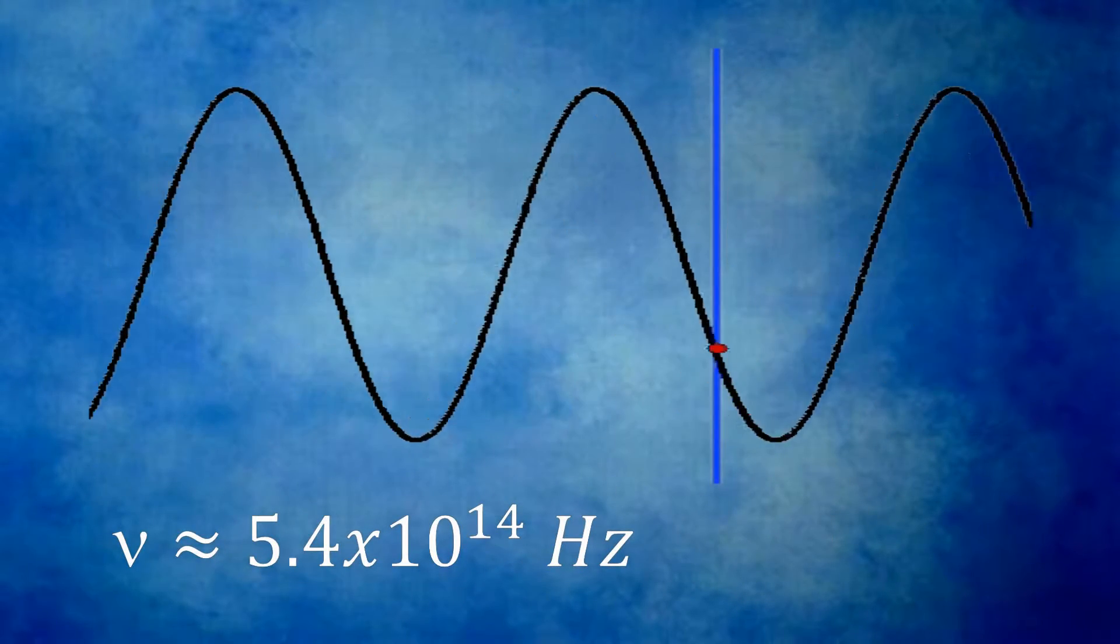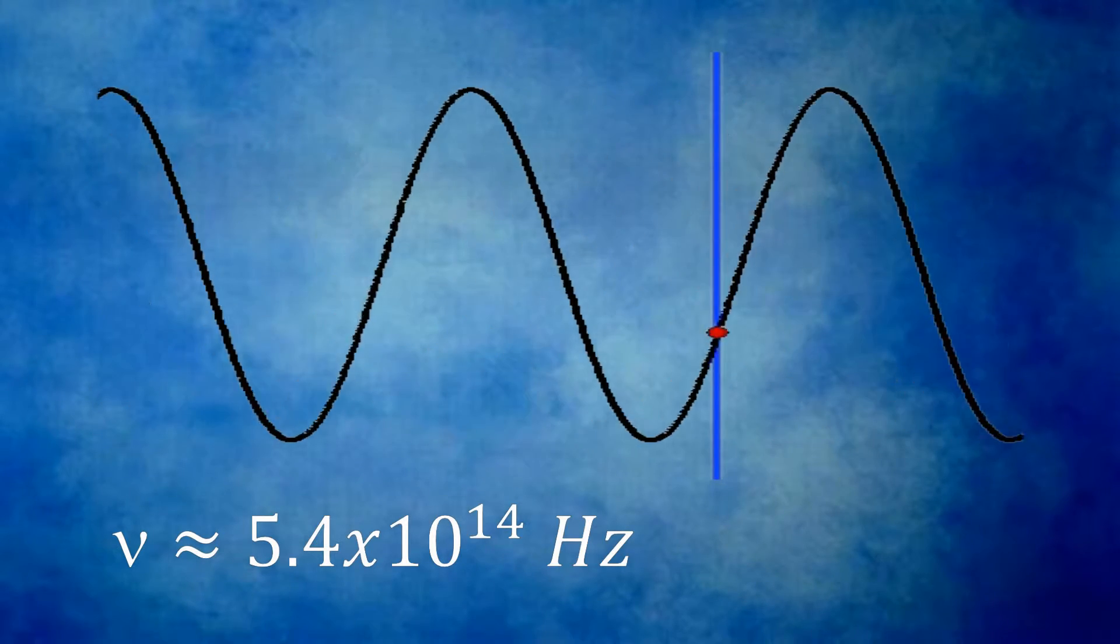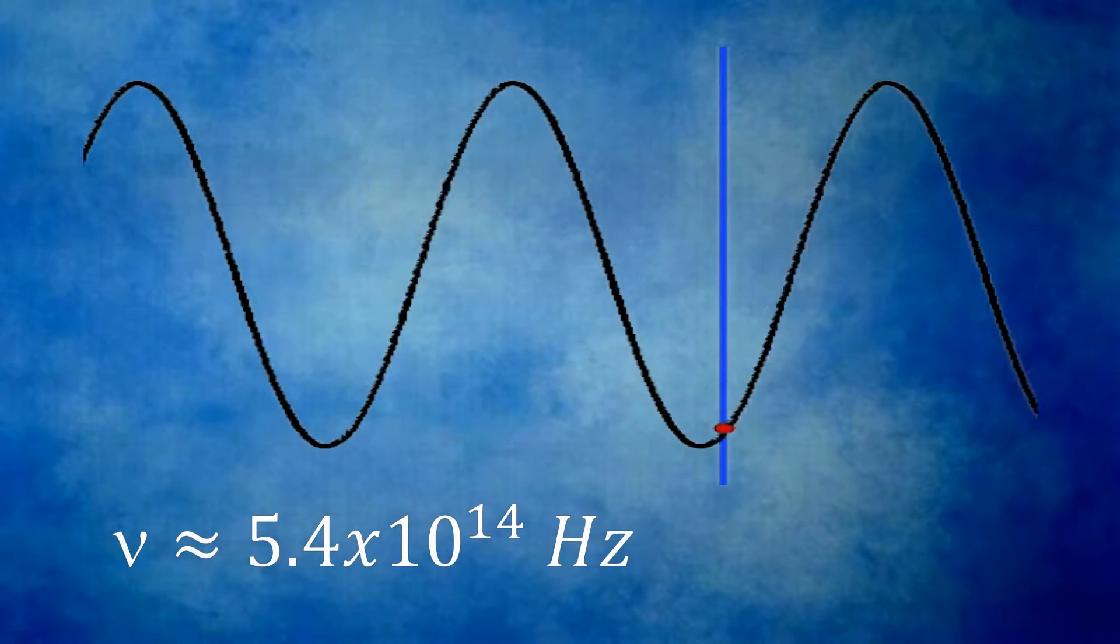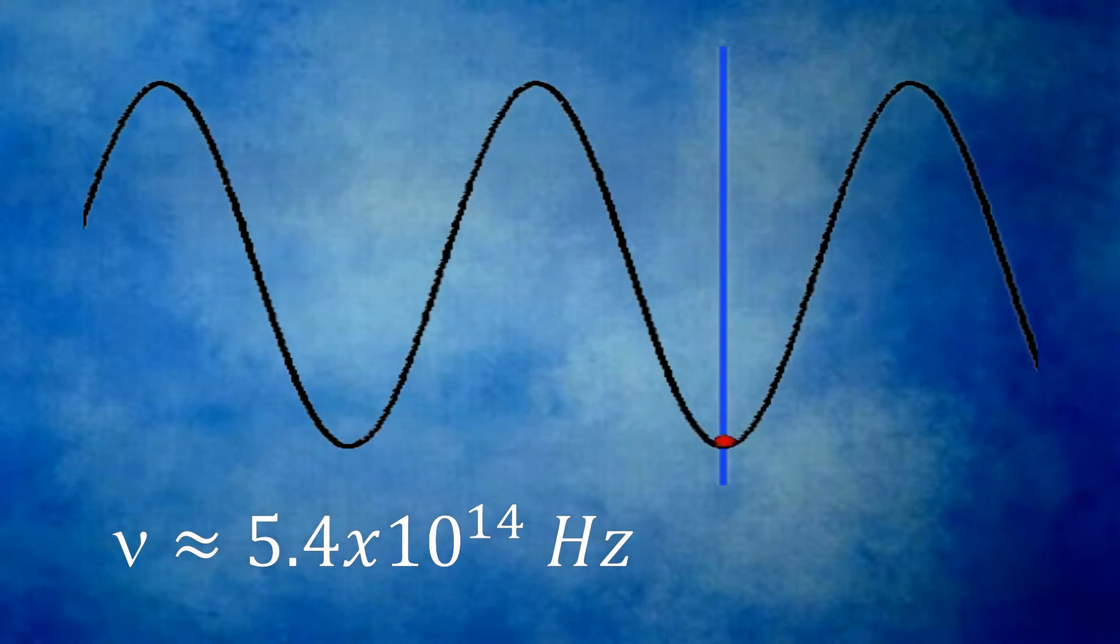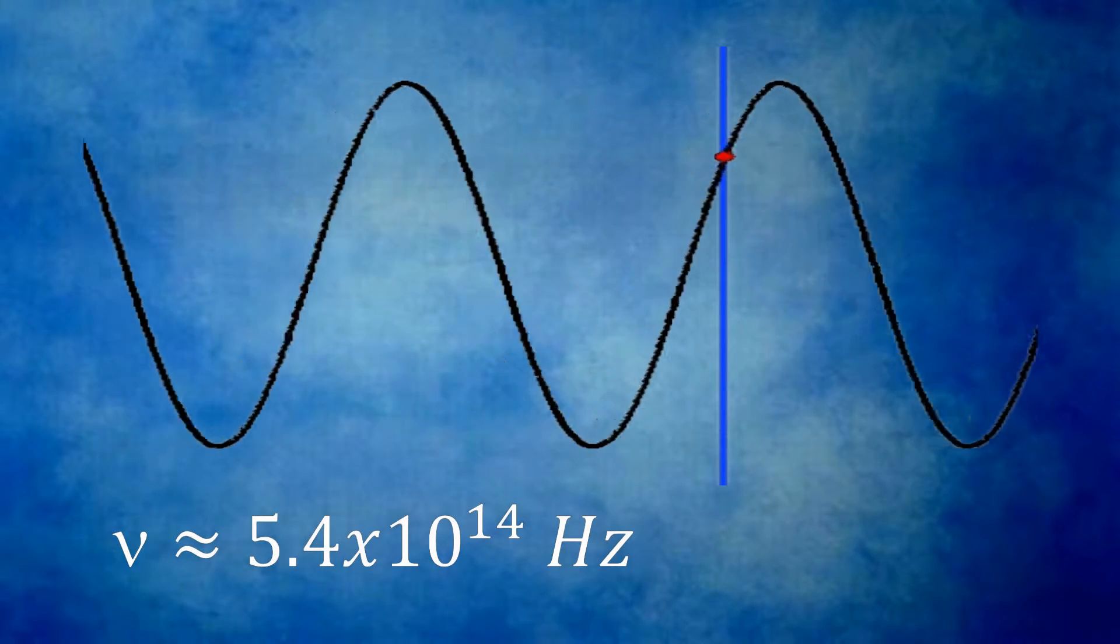The other characteristic that we should look at is that light has a frequency, and this frequency, typically represented by the Greek letter nu, is approximately 5.4 times 10 to the 14 hertz. Now it depends on exactly the color of the light. And again, we'll talk about the spectrum later.